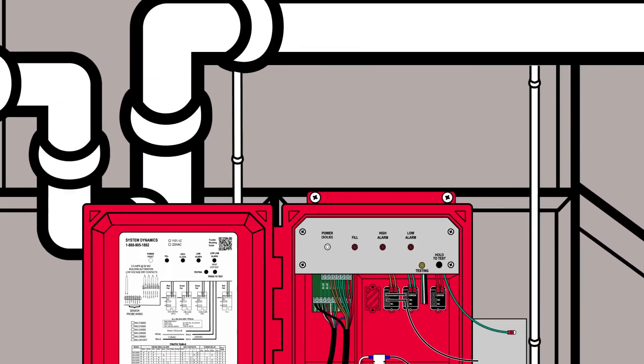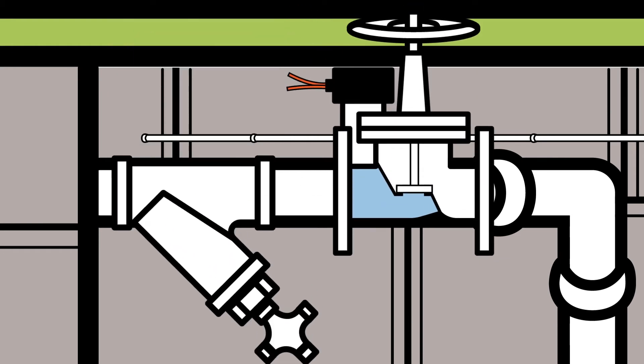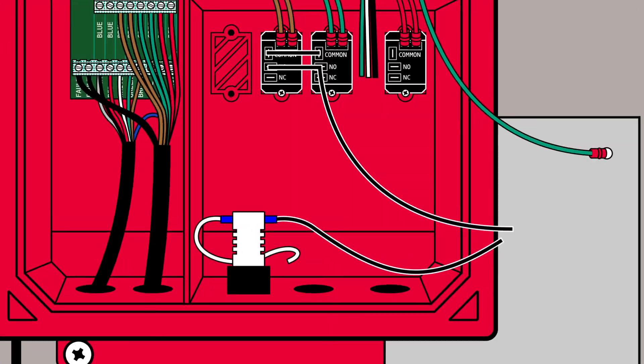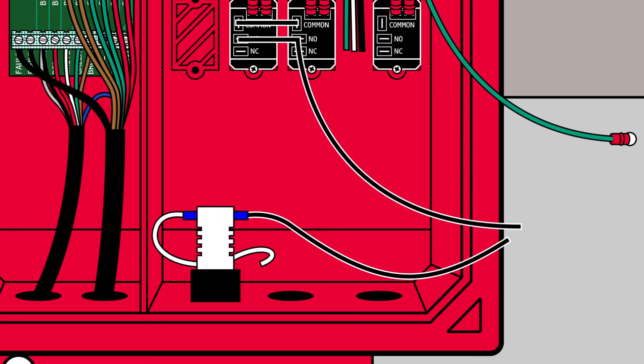When running the conduit for the valve connection, locate the placement of both the valve and the Y strainer. Run your valve connections through the conduit into the high-voltage area. They are represented here with orange wires.